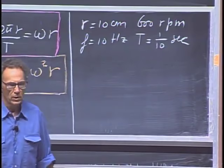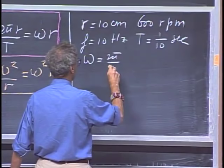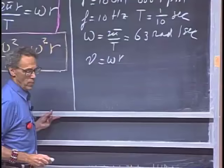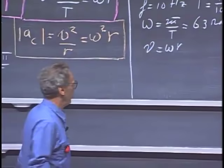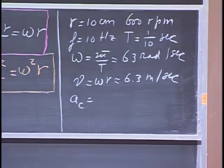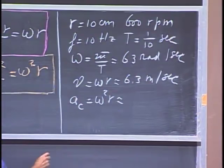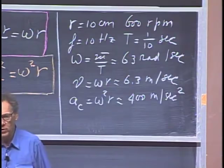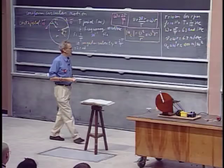So omega, the angular velocity, which is 2π divided by T, is then approximately 63 radians per second, and the speed v equals omega r, which is roughly 6.3 meters per second. The centripetal acceleration equals omega squared times r — or equivalently v squared over r — and you find that is about 400 meters per second squared. That is huge: 40 times the acceleration due to gravity. A phenomenal acceleration for a simple vacuum cleaner.